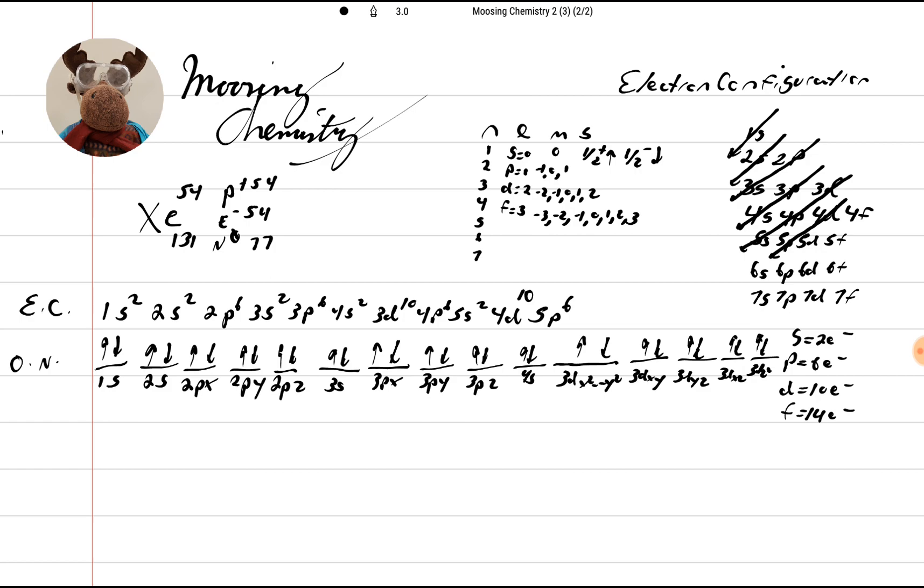Okay. Now we're out of space, so we're going to go down here. So we're going to go 5S2, so we're up and down. And then 4D10, 4D X squared minus Y squared, 4DXY, 4DYZ, 4DXZ, 4DZ squared.